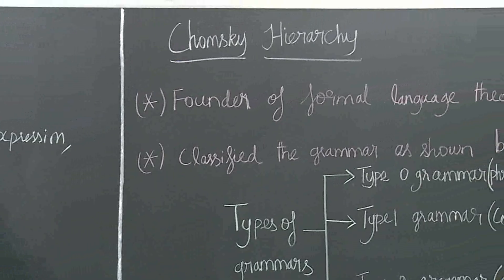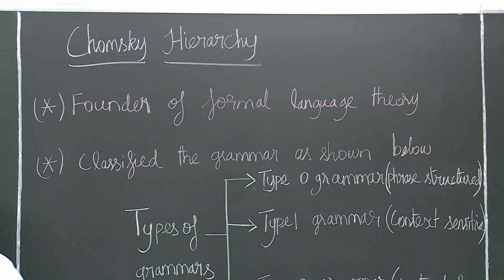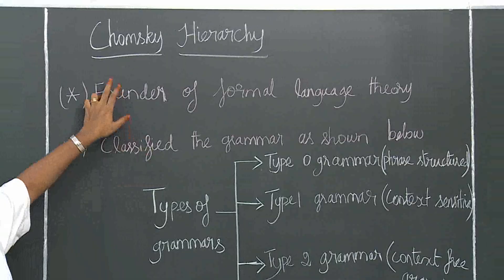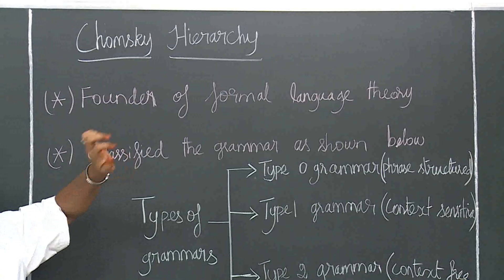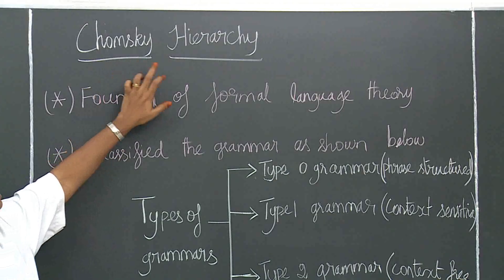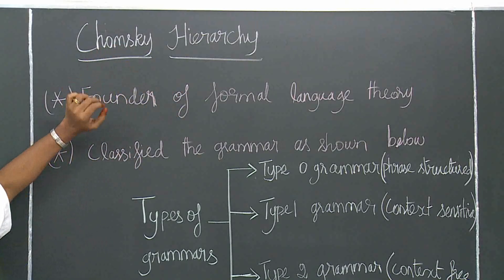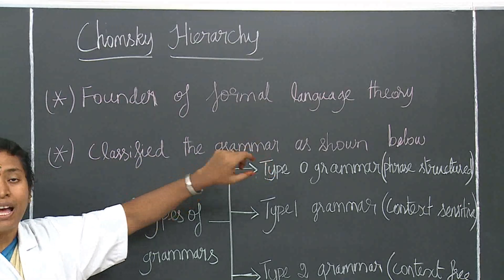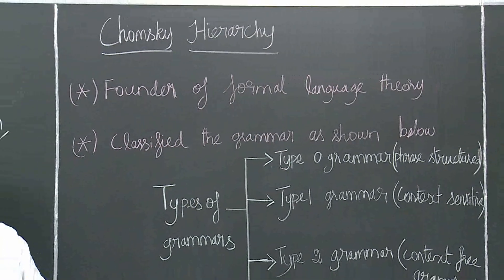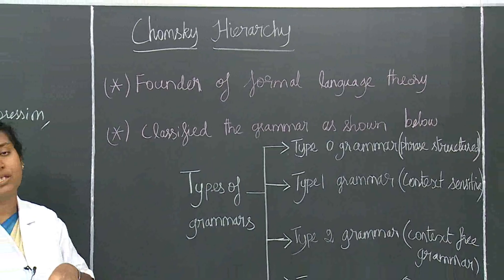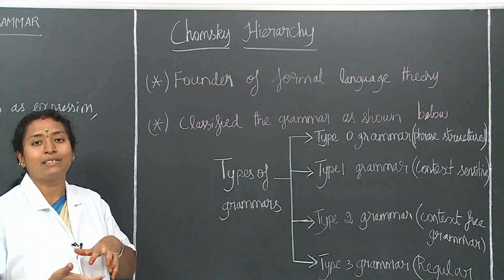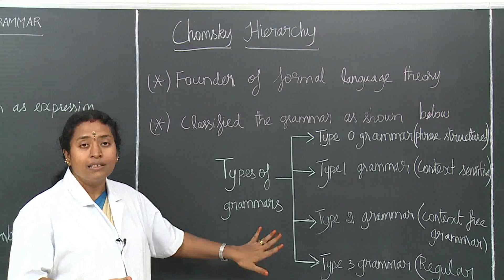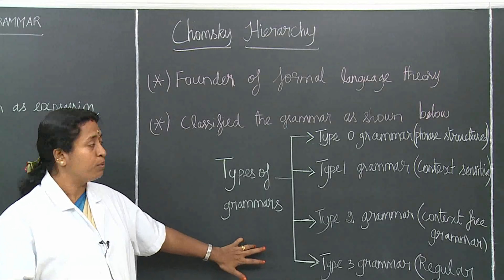If you consider the grammar, there is one classification given by Chomsky, known as the Chomsky Hierarchy. Chomsky is the founder of formal language theory. He framed and classified the grammars into four types. This grammar is the basis for everything.